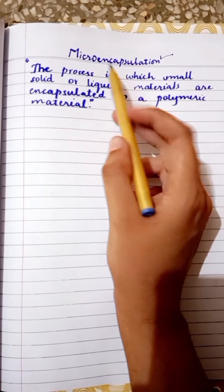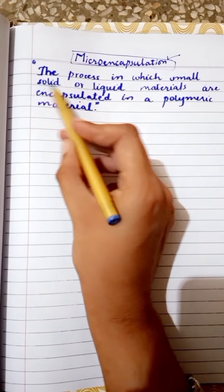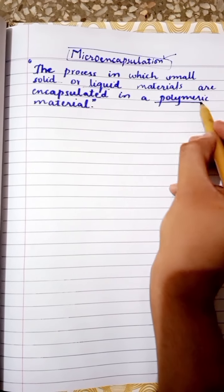So it means that in this definition two main things are being discussed. One is solid or liquid and the other thing is a polymeric material.